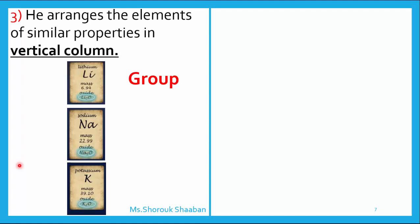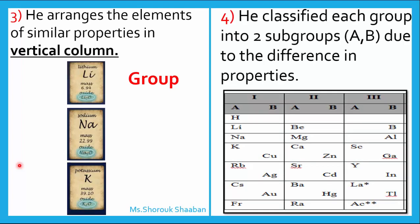Number four: he classified each group into two subgroups — A and B — because after putting similar properties in a vertical column, he found they were not so close to each other. So he decided to split each group into two subgroups, A and B. For example, for group one: subgroup A has hydrogen, lithium, sodium, potassium; subgroup B has copper and so on. When the properties were not similar enough, he placed them in subgroup B. But overall, elements of the same group share similar properties.